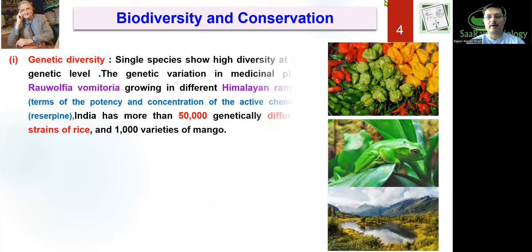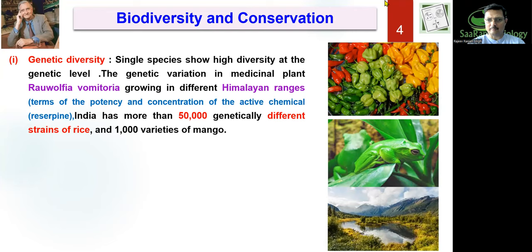What are the different types of biodiversity? This is very important from a question point of view. Biodiversity can be understood at three levels. First is genetic diversity — for example, mango is one species but there are many varieties; rice is one species but there are many different varieties. Similarly, a single species can show high diversity at the genetic level. This is called genetic diversity. Remember Rauwolfia vomitoria, mango, and rice as examples.